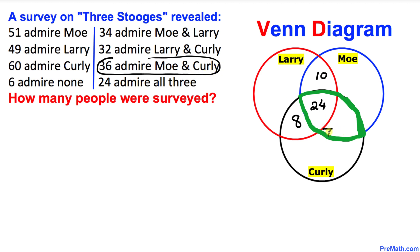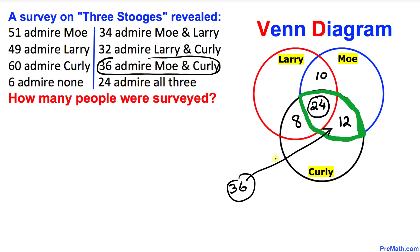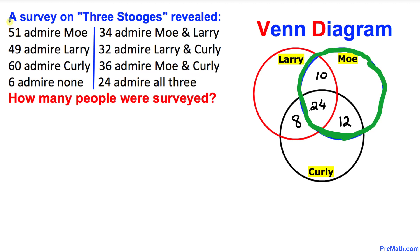Now let's focus on the 36 that admire Mo and Curly. Since 24 are already in that region, we add just 12 more, so 24 plus 12 makes 36.